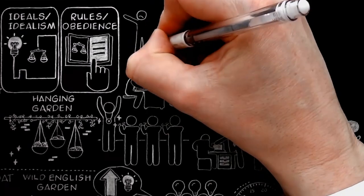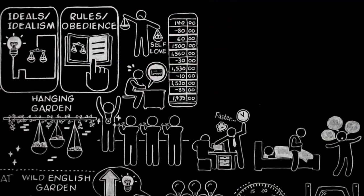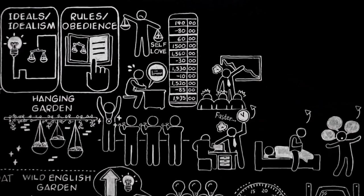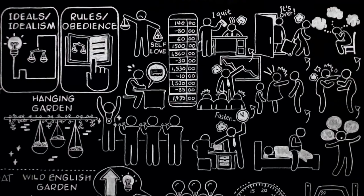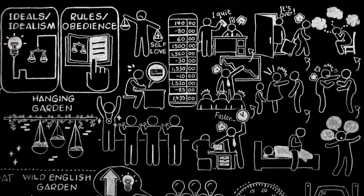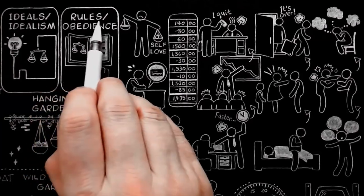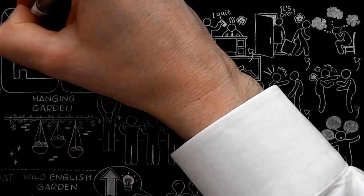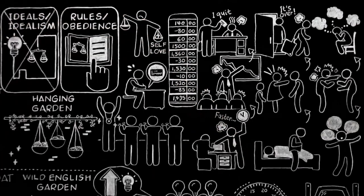In the same way, every moral failure is going to cause trouble, probably to others and certainly to yourself. By talking about rules and obedience instead of ideals and idealism, we help to remind ourselves of these facts.